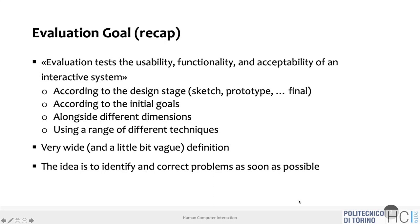In this course, we started the process from need finding, prototyping, and heuristics. You used heuristics for some sort of evaluation — you evaluated your paper prototype with heuristics. To recap, the goal of an evaluation in general is to evaluate a system, application, or interface according to different criteria: usability, functionality, acceptability, and so on. This evaluation may happen at different stages — when you have a sketch, a prototype, an advanced prototype, or the final product.